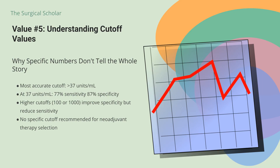What's a normal CA-19-9 level? The most accurate cutoff value for discriminating pancreatic cancer from benign pancreatic disease is serum concentrations above 37 units per milliliter. But even at this level, sensitivity and specificity for pancreatic cancer are only 77% and 87% respectively. The specificity and positive predictive value can be improved by using higher cutoff levels — 100 or even 1,000 units per milliliter — but at the expense of sensitivity.